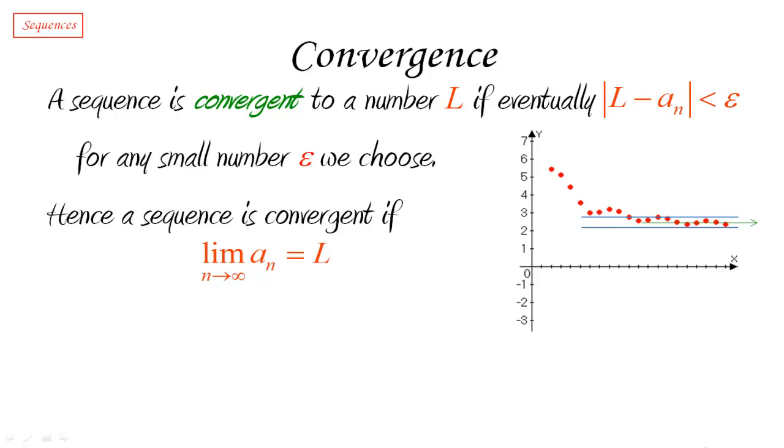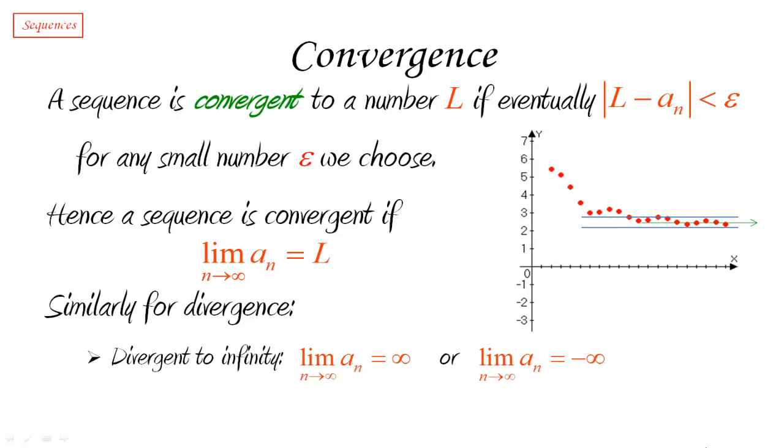Once we have the concept of convergence, of course, we can have the concept of divergence. So we can define similarly for divergence. And remember, there are two kinds of divergences. First one is divergence to infinity. So a sequence can be divergent to infinity, meaning that the limit as n goes to infinity of the sequence goes to positive infinity, or maybe even to negative infinity. But we can also have a different kind of divergence, which is the situation where that limit simply does not exist and is not even going to infinity. So a sequence that may be bouncing up and down and doing all kinds of strange things.